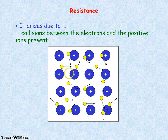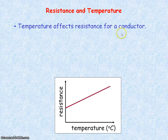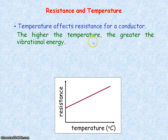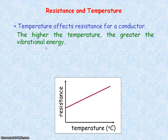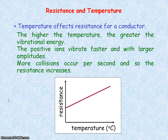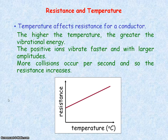These collisions that electrons make with positive ions give rise to resistance. If the temperature of the conductor increases, then the resistance of that conductor increases. This is because the higher the temperature, the greater the vibrational energy of the positive ions and the greater the kinetic energy of the electrons. The positive ions vibrate faster and with larger amplitudes, so there will be more collisions per second between the electrons and positive ions, and the resistance increases.